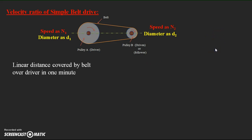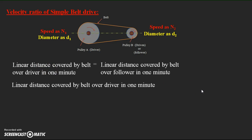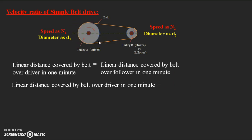By writing that equation we can give a certain expression to the velocity ratio. The linear distance covered by the belt over the driver in one minute equals the linear distance covered over the follower in one minute. If you select any point over the belt, during one rotation of the pulley it will cover a distance equal to the circumference.